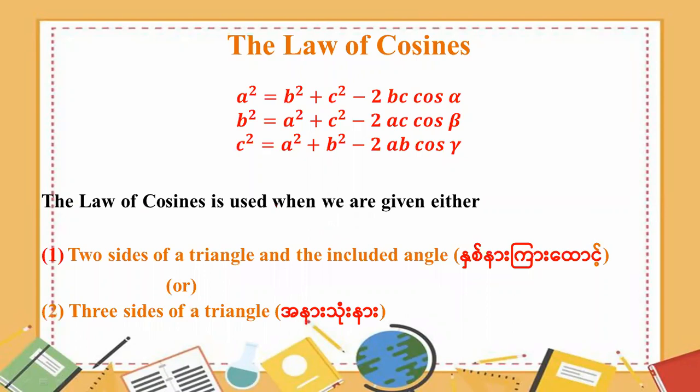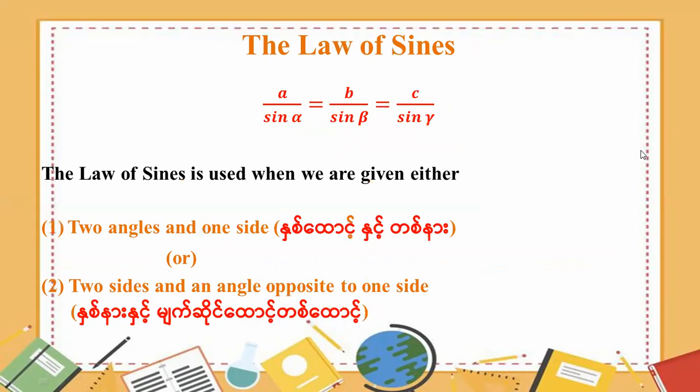The law of cosines: a squared equals b squared plus c squared minus 2bc cos alpha. b squared equals a squared plus c squared minus 2ac cos beta. c squared equals a squared plus b squared minus 2ab cos gamma.